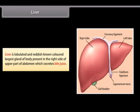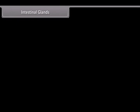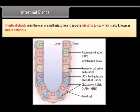The liver is a lobulated, reddish-brown, largest gland of the body, present on the right side of the upper part of the abdomen, which secretes bile juice. The pancreas is a yellow gland present just behind the stomach which secretes pancreatic juice. The pancreatic duct carries pancreatic juice to the small intestine. Intestinal glands lie in the wall of the small intestine and secrete intestinal juice, also known as succus entericus.